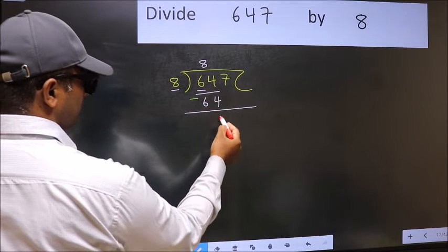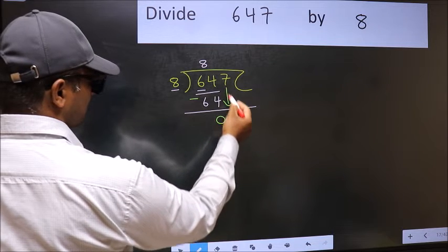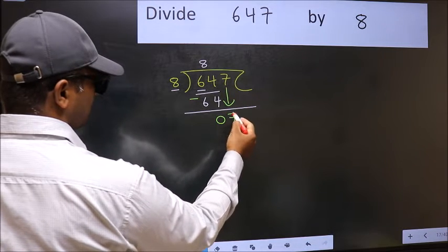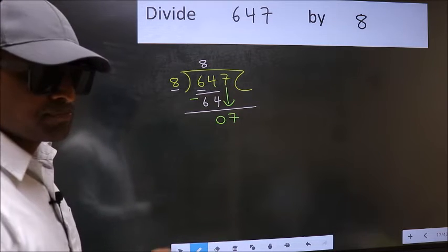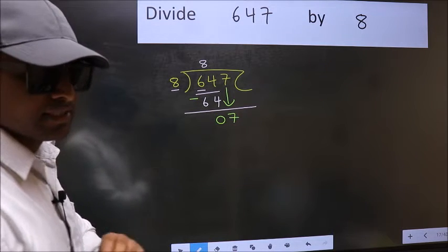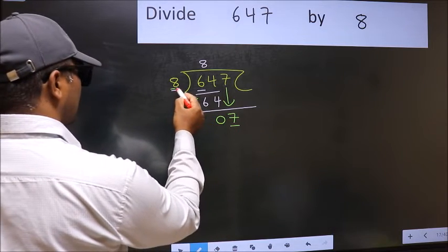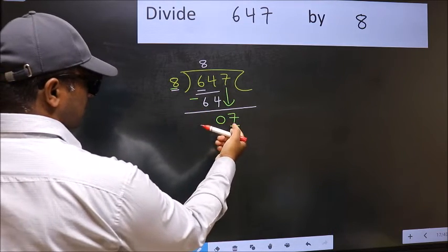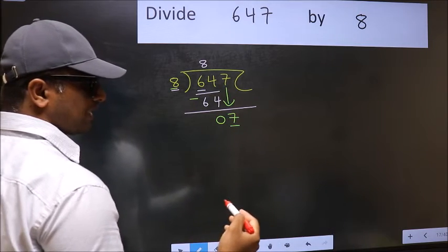After this, bring down the beside number, so 7 down. After this step, the mistake happens. Here we have 7 and here 8. 7 is smaller than 8, so what many do...